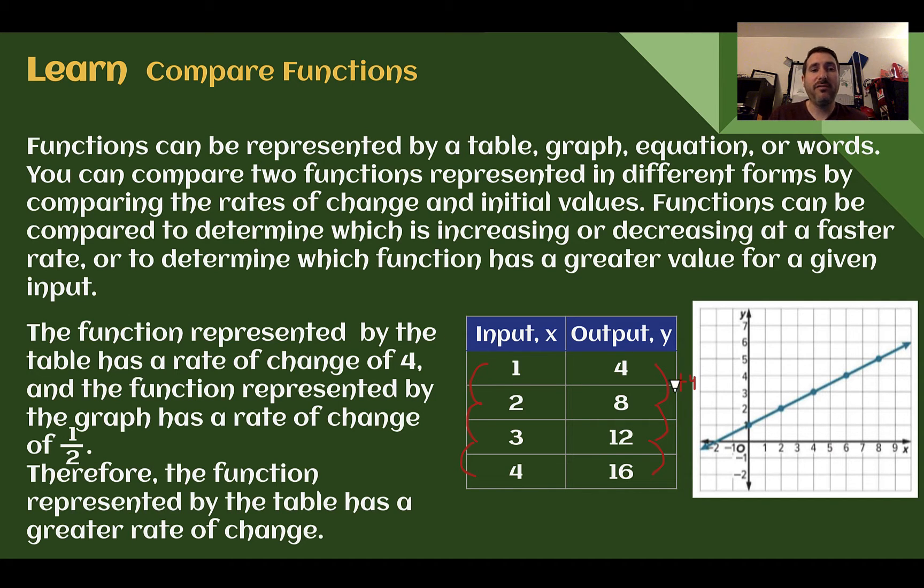Where in the graph, we can see it has a rate of change of 1 half. It goes up 1 every 2 units over. So our rise over our run would be 1 over 2. Our rate of change is 1 half. So we can compare these and say that the table has a faster rate of change. It is 4 compared to half.